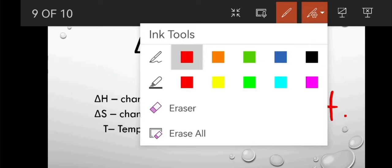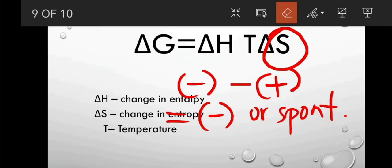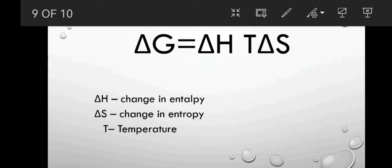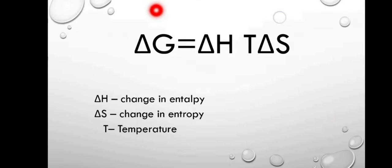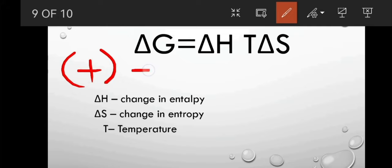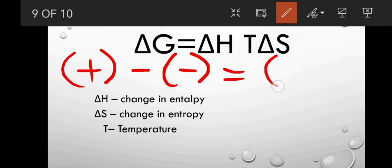If the opposite is true and both are unfavorable, we have a positive delta H and a negative delta S. A positive minus a negative will always be positive, or non-spontaneous.